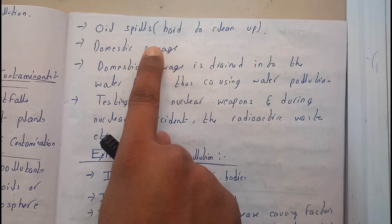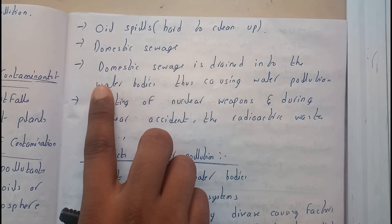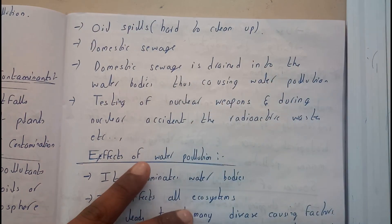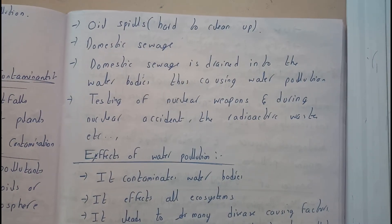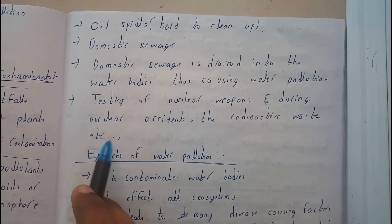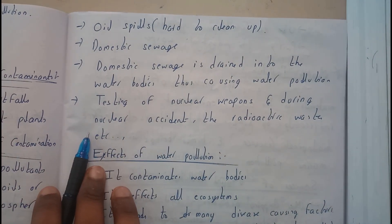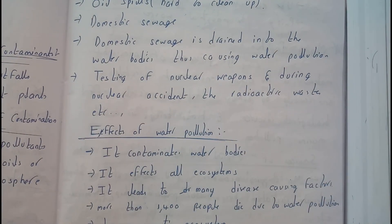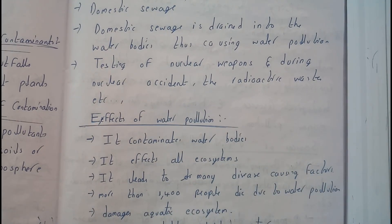Oil spills are really hard to clean. Domestic sewage is also drained into water bodies, causing water pollution — domestic waste leads directly to water pollution. Additionally, testing of nuclear weapons and nuclear accidents release radioactive materials that are directly or indirectly led into water, causing water pollution. Those are the causes of water pollution.